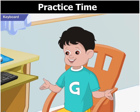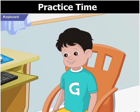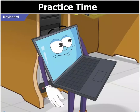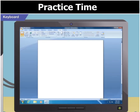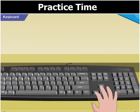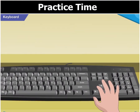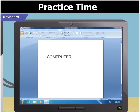Really? Can I try it on the computer? Sure, Goggle. Write C-O-M-P-P-U-T-E-R and then to correct the spelling, position the cursor after the first P and then use the backspace key to erase the extra P.